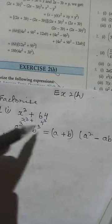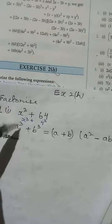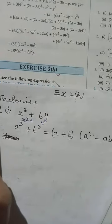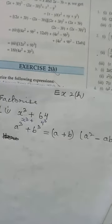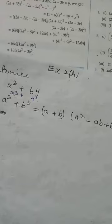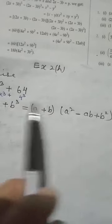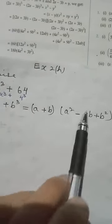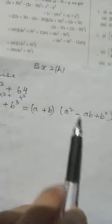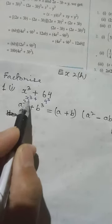Comparing, x is similar to a and 4 is similar to b, so it becomes the formula a to the power 3 plus b to the power 3. Since we have to factorize — that means find the factors — we apply the third form of the formula. The first and second forms are used to expand, but here we want to find the factor, so we use the third form: a cube plus b cube equals a plus b, whole times a square minus ab plus b square.